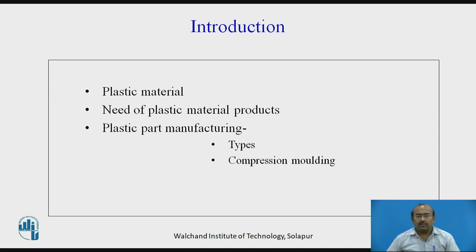Let us briefly discuss the introduction regarding the need for plastic material and various types of part manufacturing methods. Plastic is an advanced material used nowadays not only to build new products but also as a replacement for existing materials. Considering various geometries, quantity, quality, and other features, varieties of part manufacturing methods have been developed, one of which is compression molding.